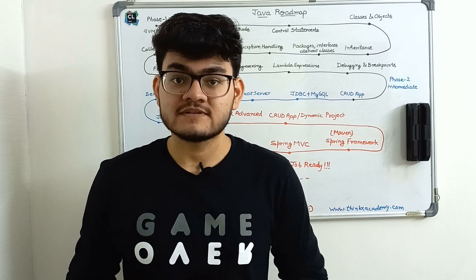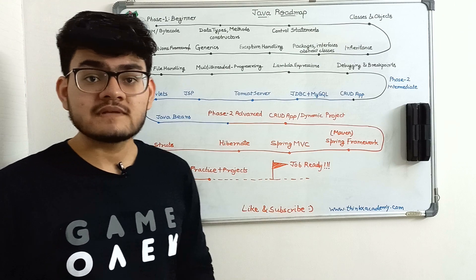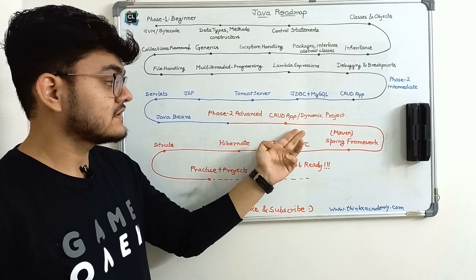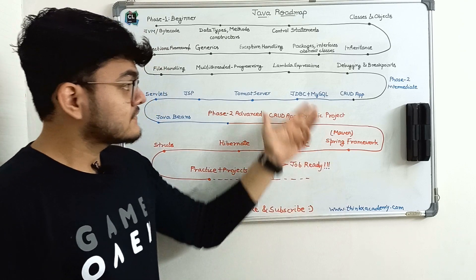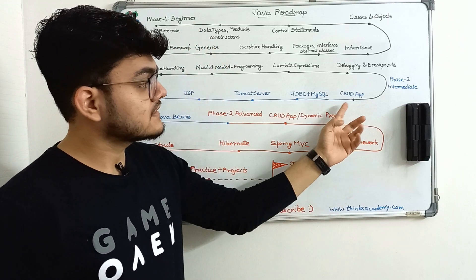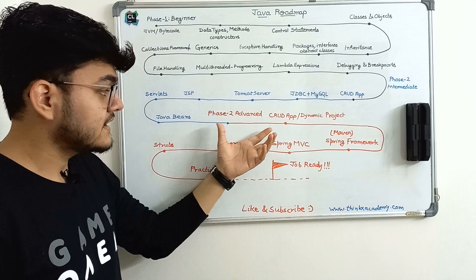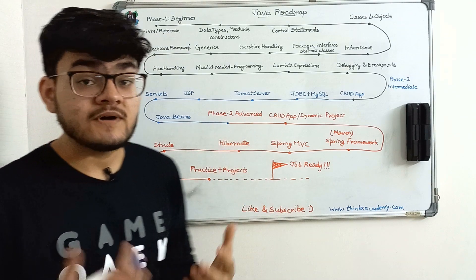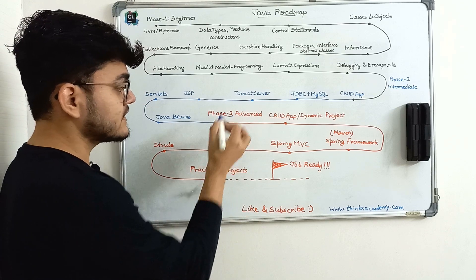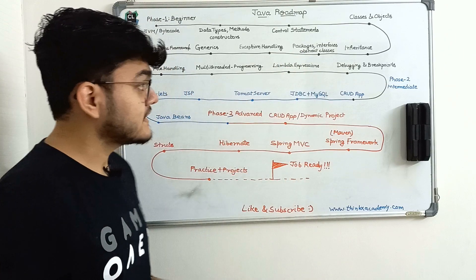So let's start with phase one. This roadmap is in three colors. The first one is the black one, the second one is the blue one, and the third one is the red one. The black one is phase one, which is the beginner phase. The blue one is phase two, which is the intermediate phase, and the red one is the advanced phase. So I'm going to start with the first phase.